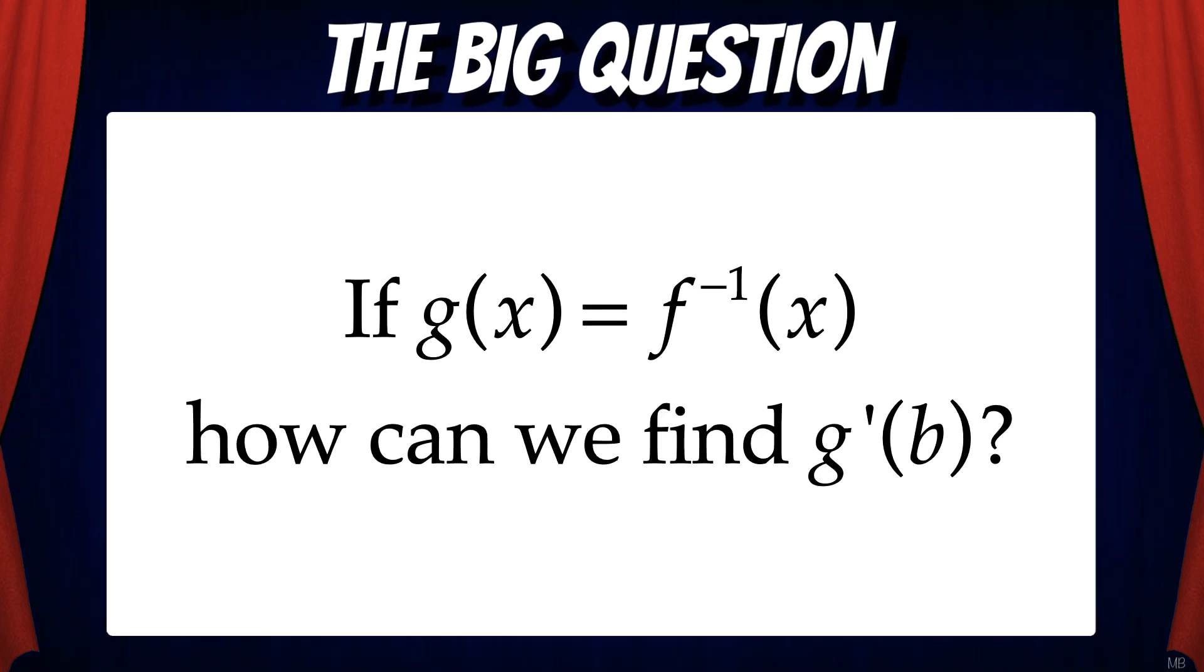Here's the big question. If g of x equals f inverse of x, how can we find g prime of b, where b is an x value in the domain of the g function?